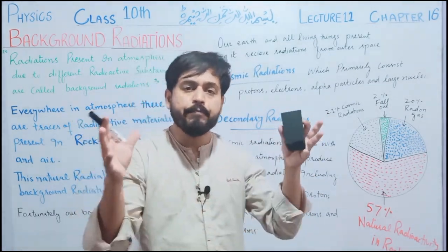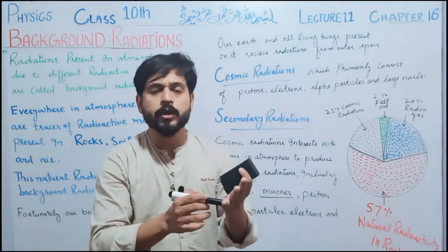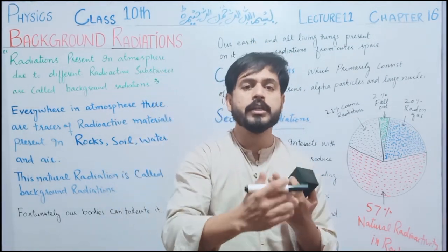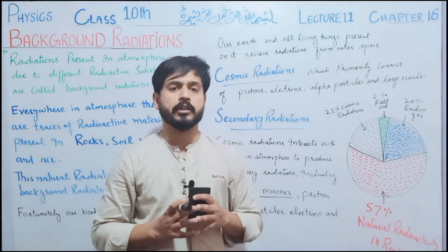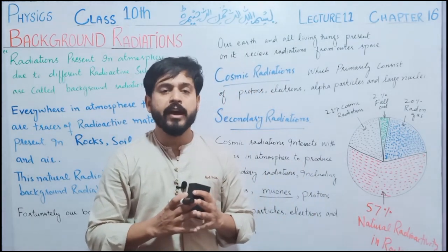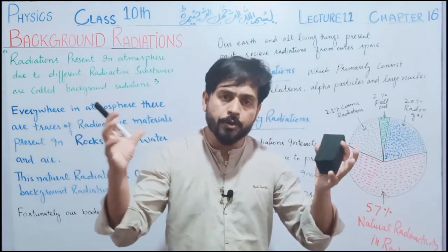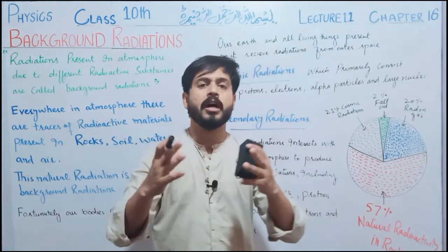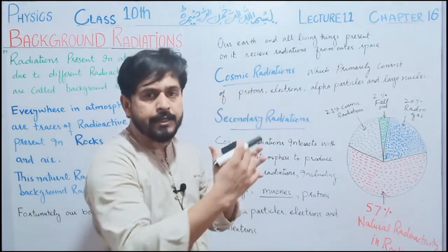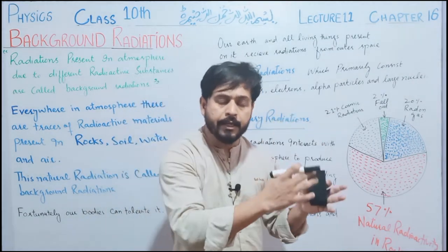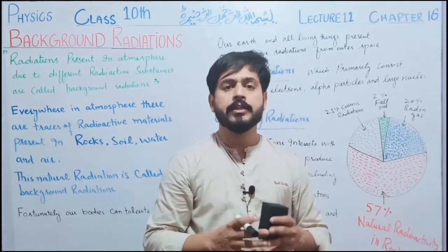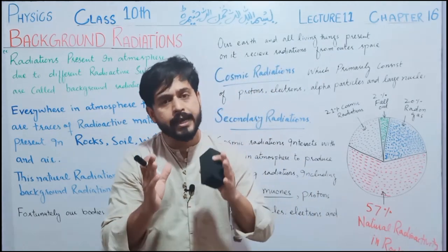Cosmic radiation primarily consist of protons, electrons, alpha particles, and heavy nuclei۔ اس میں protons ہوں گے، electrons ہوں گے، neutrons ہوں گے، helium کے alpha particles ہو سکتے ہیں اور different kinds کے large nuclei ہو سکتے ہیں، کیونکہ یہ بہت speed سے travel کر کے زمین تک آ رہے ہیں۔ جیسے یہ ہمارے environment میں آتے ہیں، ہوا کے contact میں آنے کے بعد یہ further breakdown کا process کرتے ہیں، اور اس کے نتیجے میں secondary radiation produce ہوتی ہیں۔